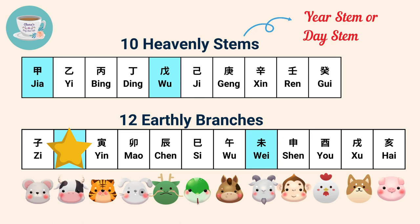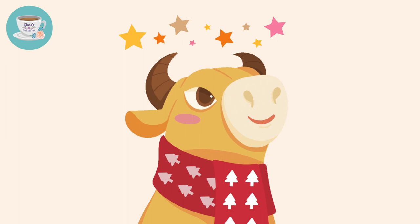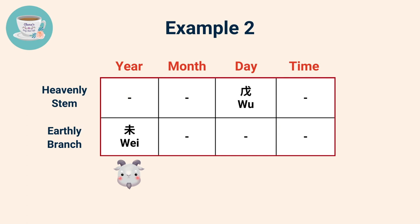Let's have a look at an example. In this Ba Zi, the year stem is Jia, and Chou can be found in the earthly branches. As Jia and Chou are compatible, therefore Chou — the ox — is the Nobleman star. This means that the person who provides you support in time of need is very likely to be someone born in the year of the ox. In the second example, Wu is compatible with Wei in the earthly branch, meaning your Nobleman star is the person born in the year of the goat.